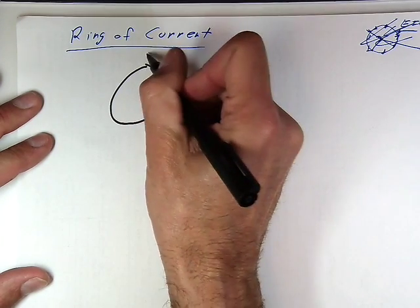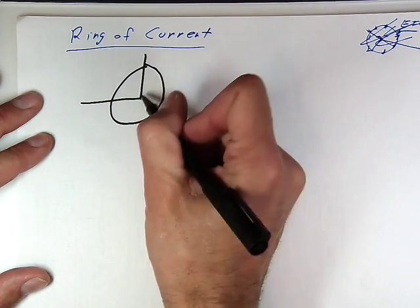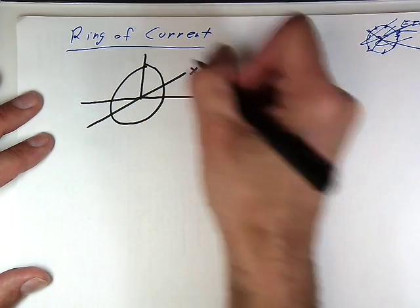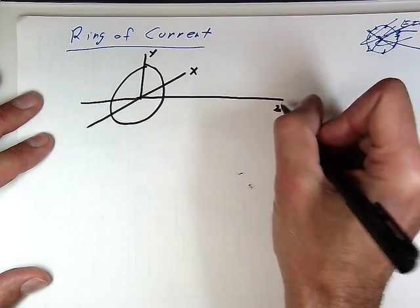So we'll just draw a ring like this, and we'll sort of orient it to be on an xy coordinate system like this, xyz. It is a three-dimensional beast. So there's x, there's y, and there's z, something like that.